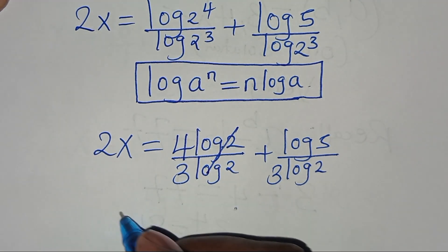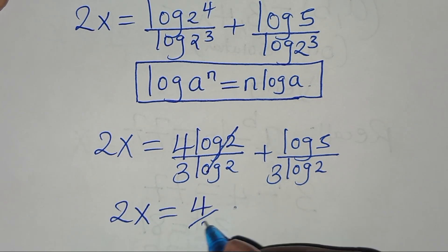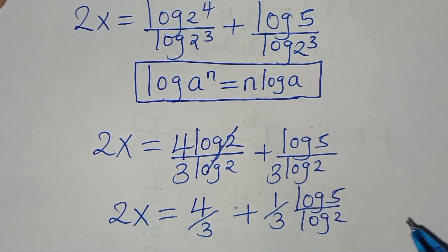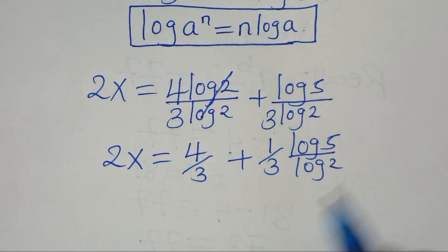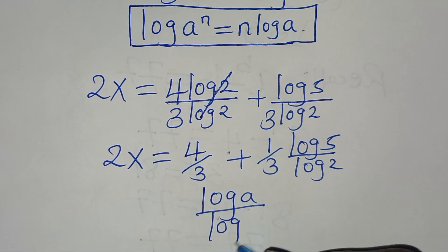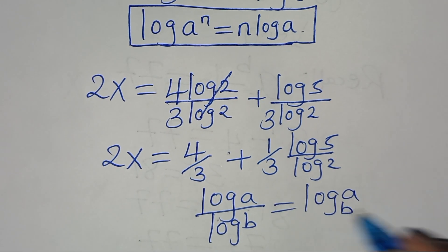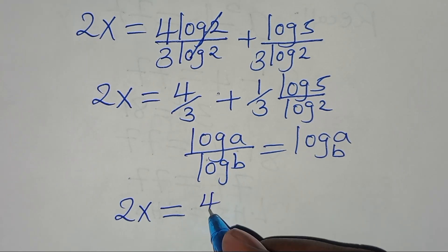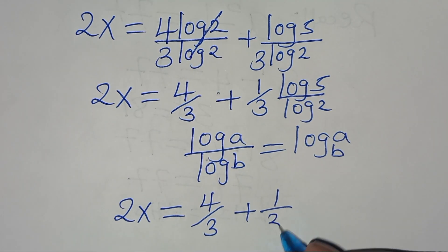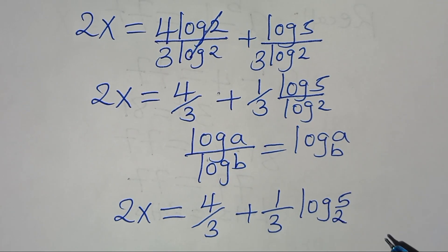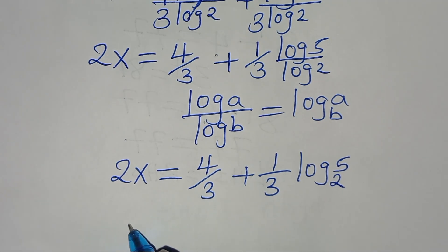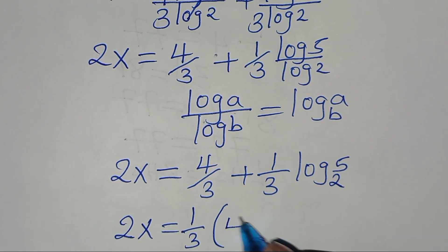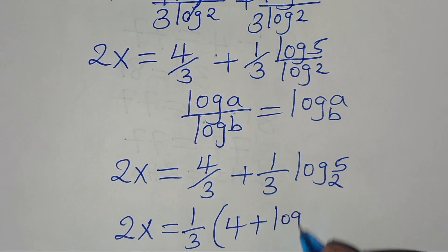Simplifying log 2 and log 2, we have 2x equals 4 over 3 plus (1 over 3) times log 5 divided by log 2. Now log 5 divided by log 2 is in the form of log a divided by log b, which equals log base b of a. Applying this logarithm property, 2x equals 4 over 3 plus (1 over 3) log base 2 of 5. Since one-third is common, 2x equals one-third times (4 plus log base 2 of 5).